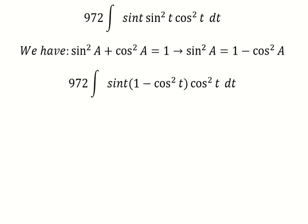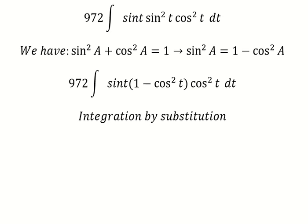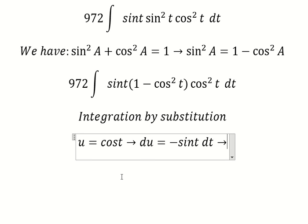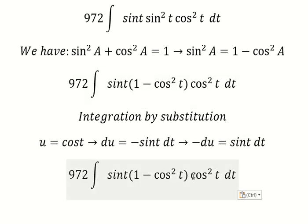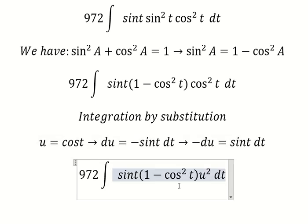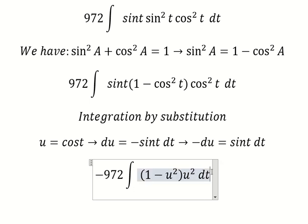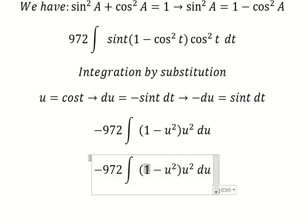Next we use integration by substitution. I will let u equal cos(t). Taking the first derivative of both sides, we get negative sin(t). Since we don't have the negative sign, I will move this to the left side. So this term changes to u, and sin(t) dt becomes negative du.